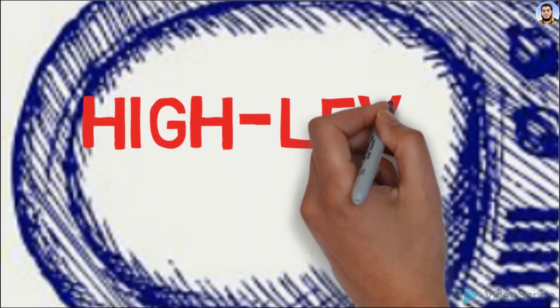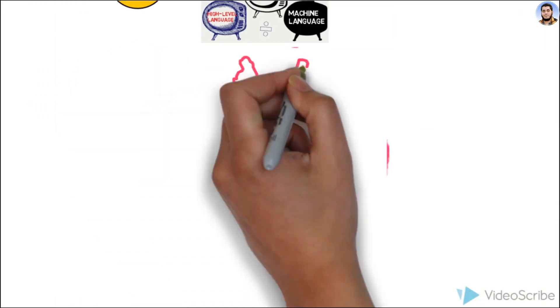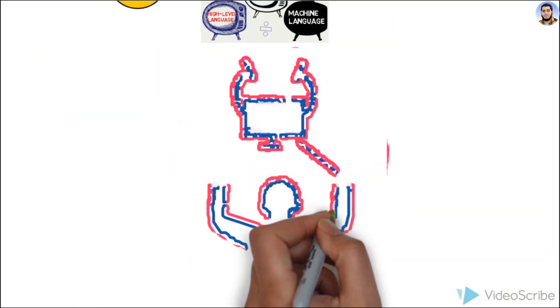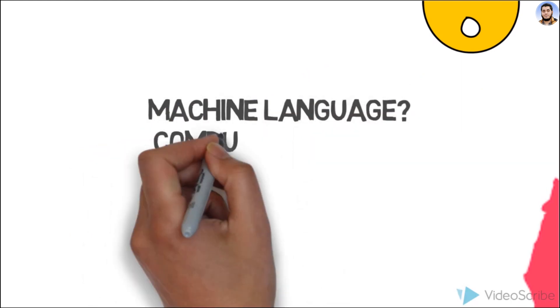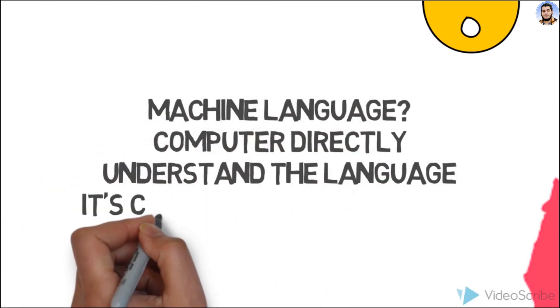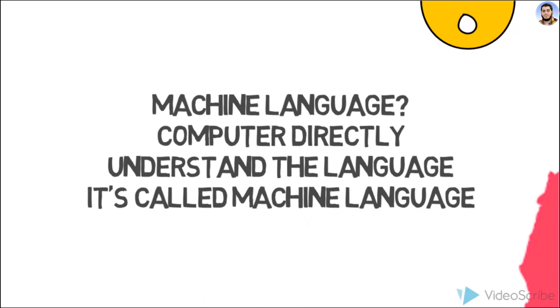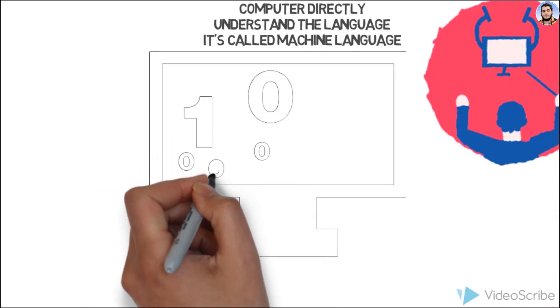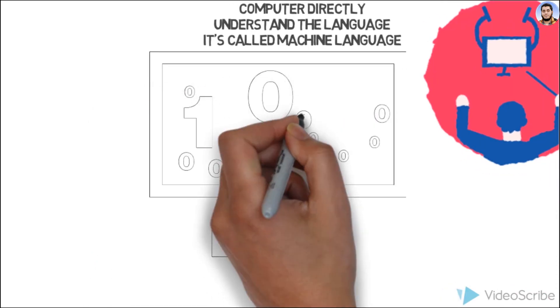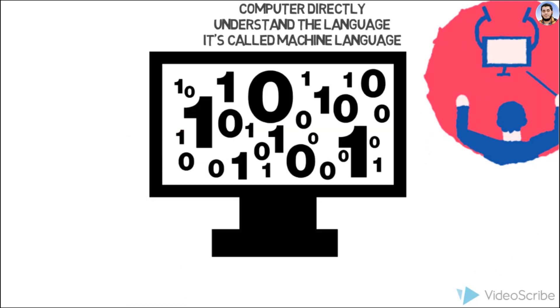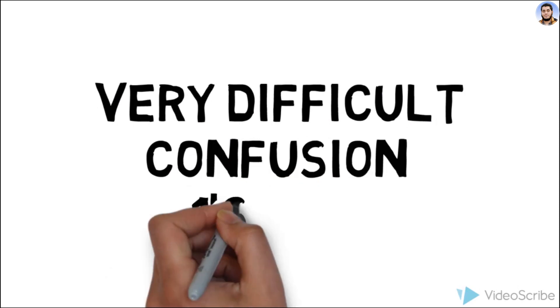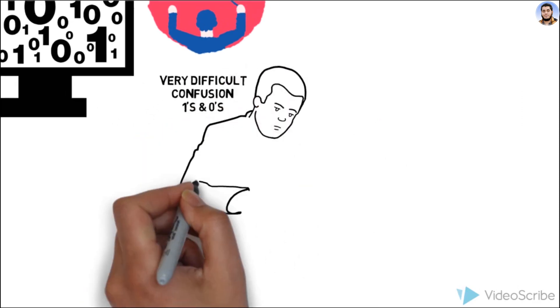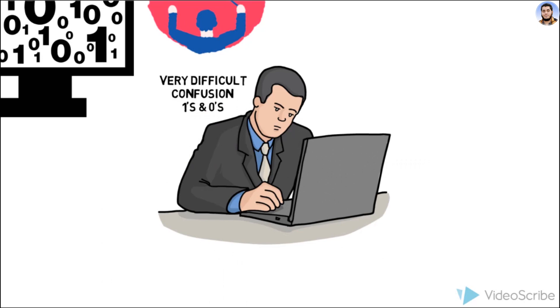Machine language وہ ہے جب ہم code لکھیں تو computer اسے directly understand کر سکتا ہے۔ یعنی zeros and ones میں instructions بناتے ہیں — مثلاً add کی instruction binary میں لکھیں گے۔ لیکن اتنے statements zeros and ones میں بنانا بہت difficult ہے اور بہت confusion آتی ہے۔